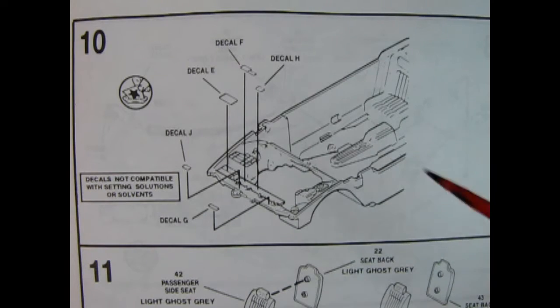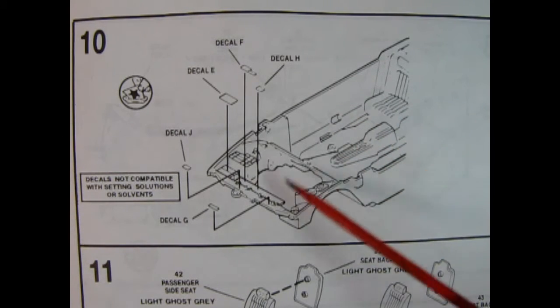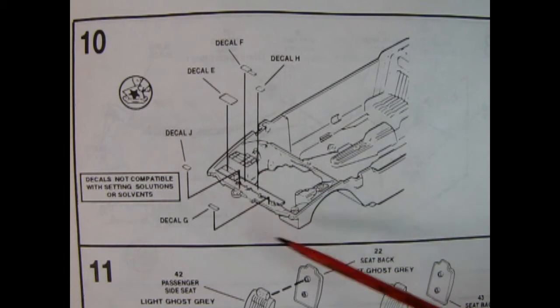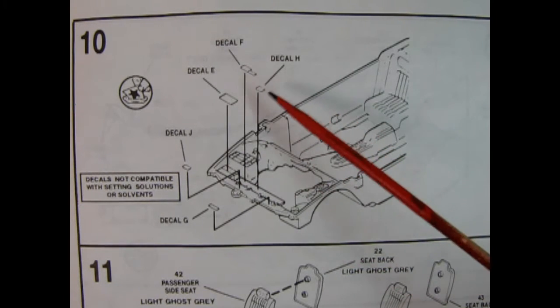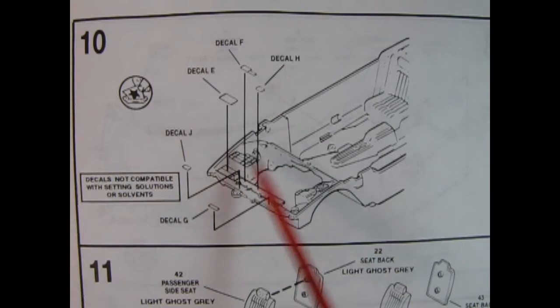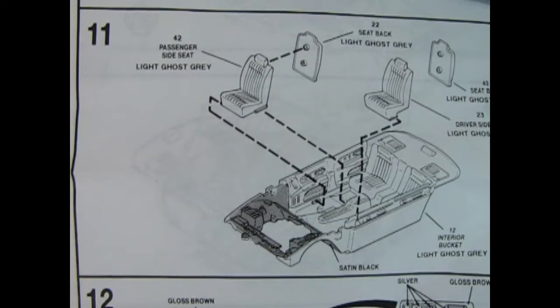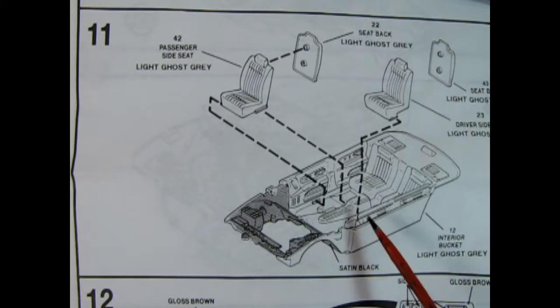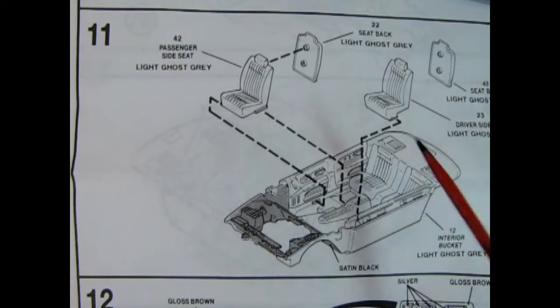So here we have panel 10 and this is our interior tub, it also has the inner fenders in here and it says to add on all these decals in here but there's a note it says decals not compatible with setting solutions or solvents so be careful there that you don't put that on and then put on some Solvaset and all of a sudden these things are all chewed up and gone. Now here we have panel 11 showing the front seats and seat backs being put together and then those drop into that interior.